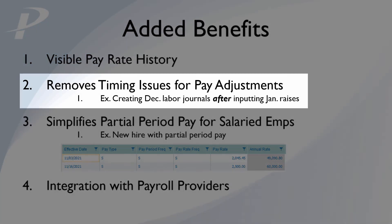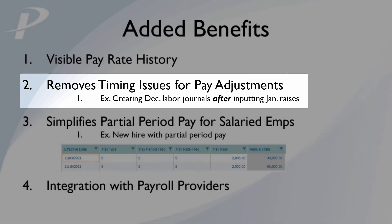The second benefit is that you can update future pay rates for employees without affecting the current period's labor journals. For example, if you have annual raises for your staff in January but still need to create journals for December, you no longer have to wait until December journals are created before inputting the new rates.